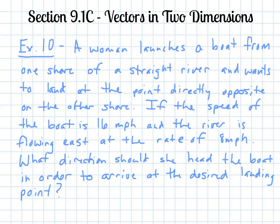Example 10 is a woman launches a boat from one shore of a straight river and wants to land at the point directly opposite on the other shore. If the speed of the boat is 16 miles per hour and the river is flowing east at the rate of 8 miles per hour, what direction should she head the boat in order to arrive at the desired landing point?